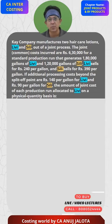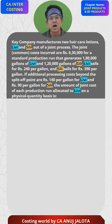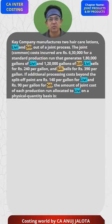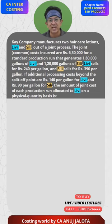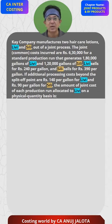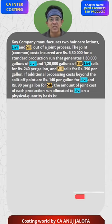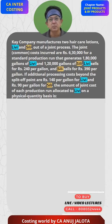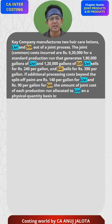The joint cost — the common cost — incurred is ₹6,30,000 for a standard production run that generates 1,80,000 gallons of Livy and 1,20,000 gallons of Silly. Livy sells for ₹240 per gallon and Silly sells for ₹390 per gallon.